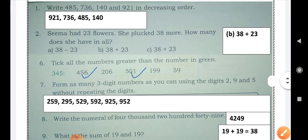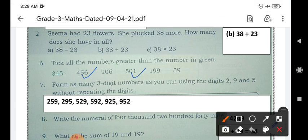Question 2. Seema has 23 flowers. She plucked 38 more. How many does she have in all? Here, in all is a keyword for addition. What we have to do is just add the two numbers and we will get the correct option. We have to add 38 and 23 and this is our correct option. 38 plus 23.